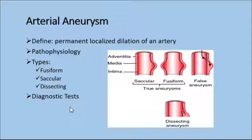The diagnostic test is usually a CT scan. It can include chest and abdominal x-rays, and aortic arteriogram. Sometimes they've gone in with the arteriogram and actually done a repair at the same time. Ultrasound is useful in determining the size, shape, and location.